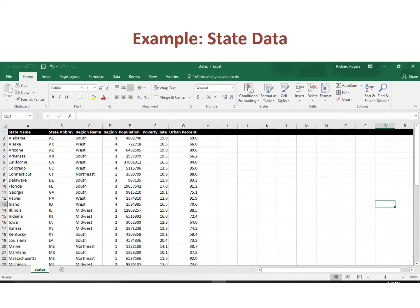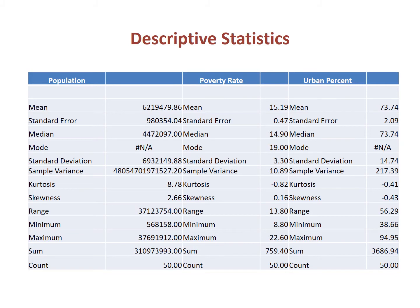When we need an example in this presentation, it will come from a dataset containing the 50 states. We will look at three variables: the number of people (population for short), the poverty rate calculated as the percent of people living below the poverty line, and percent urban — the percentage of people living in census-defined urban places.